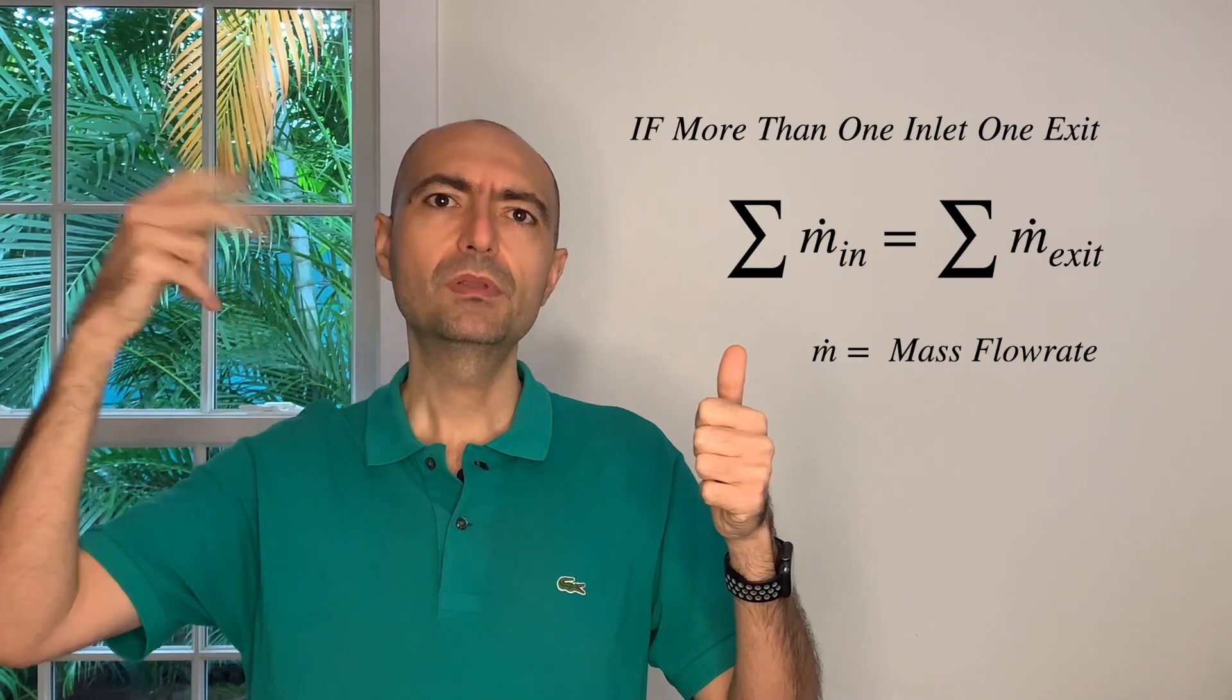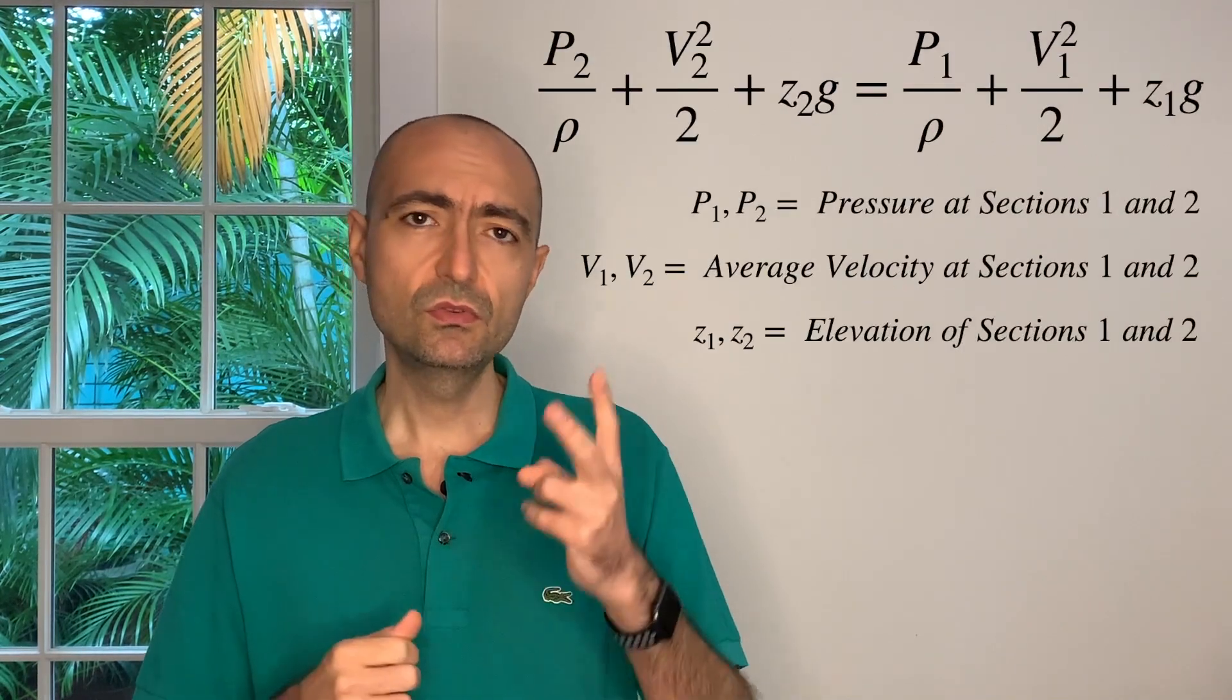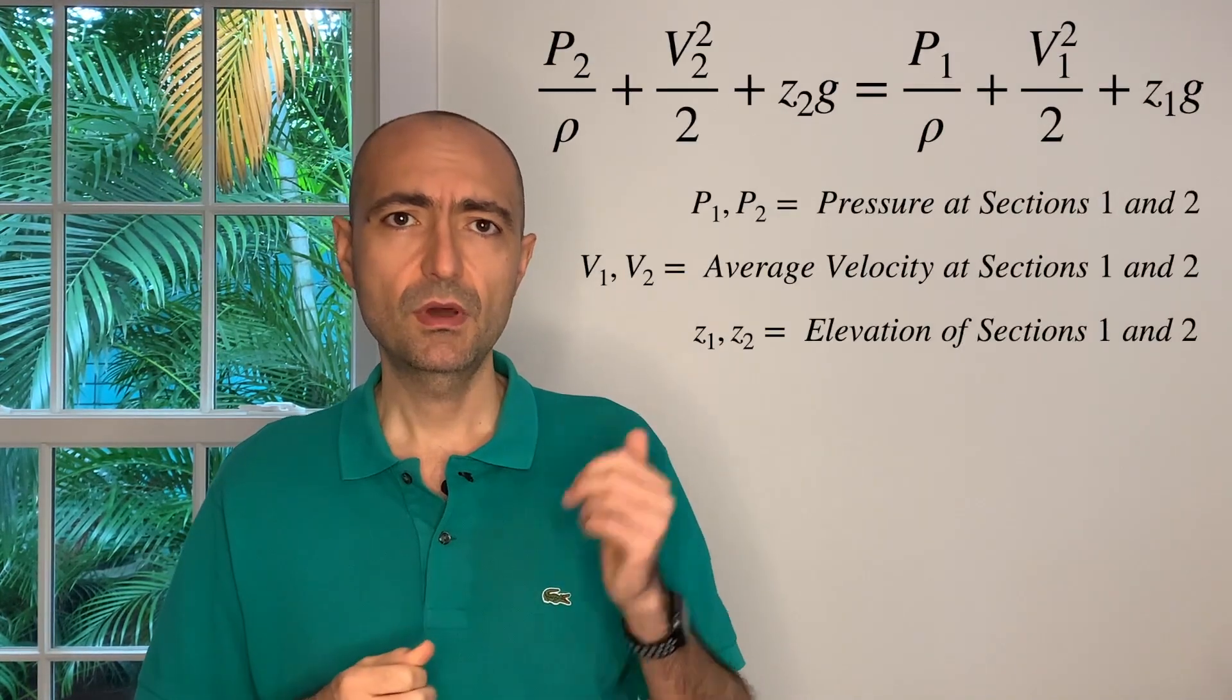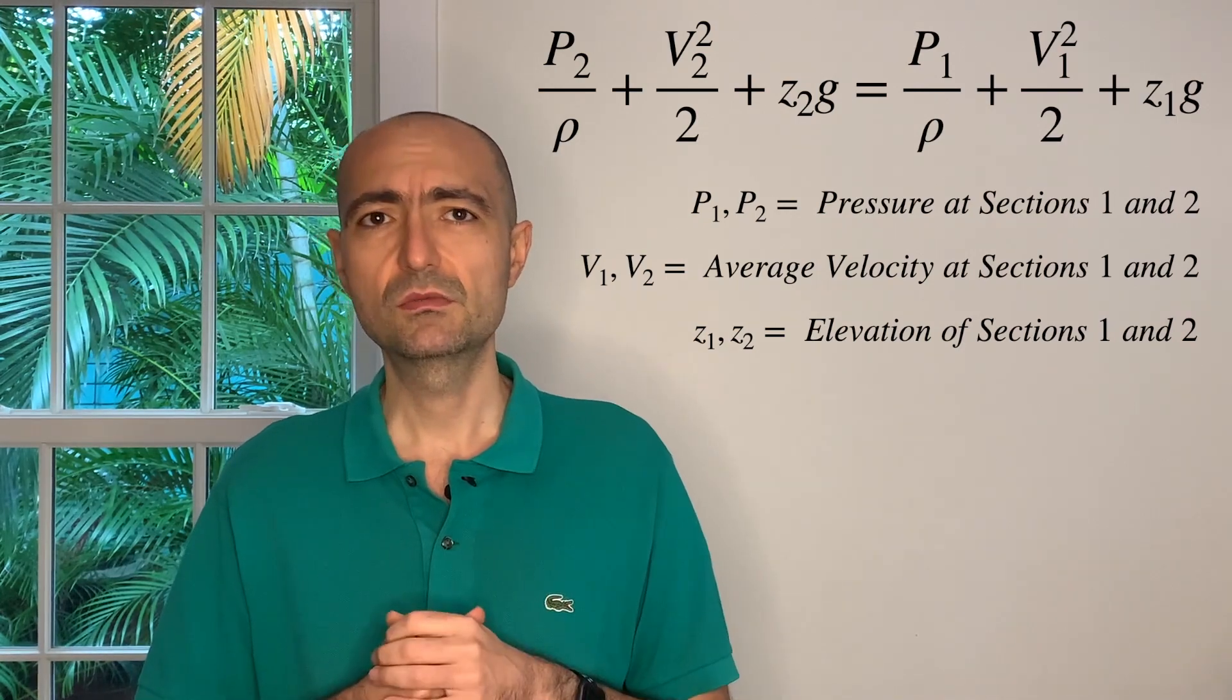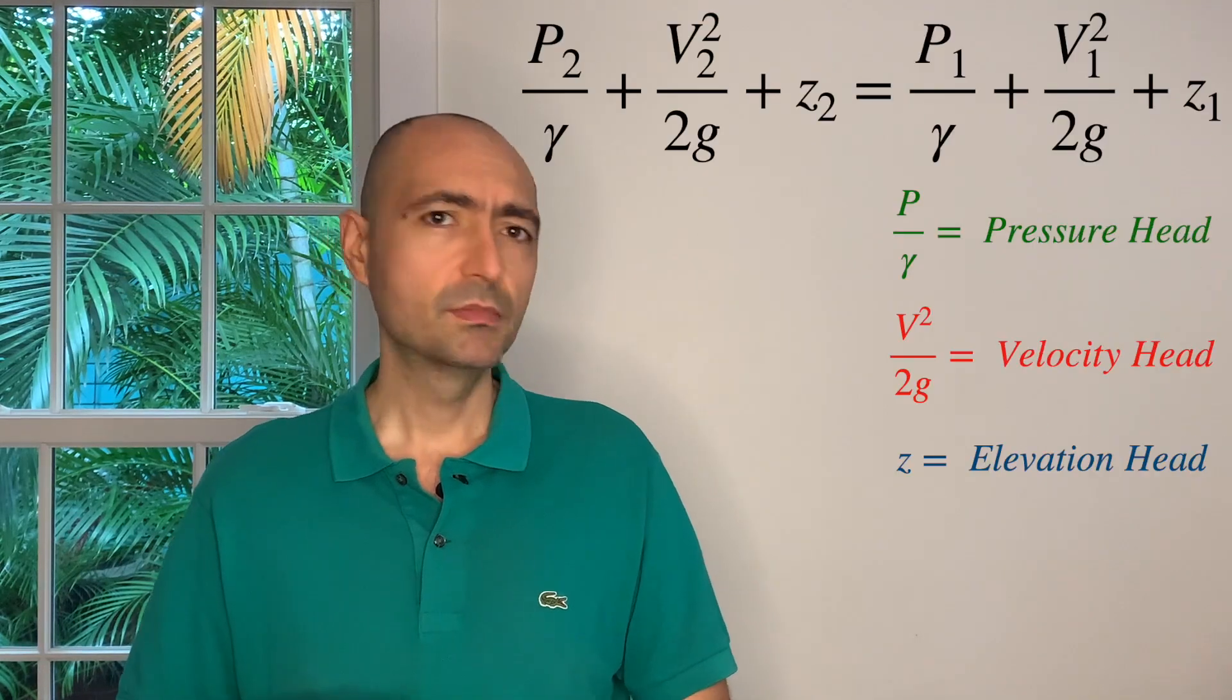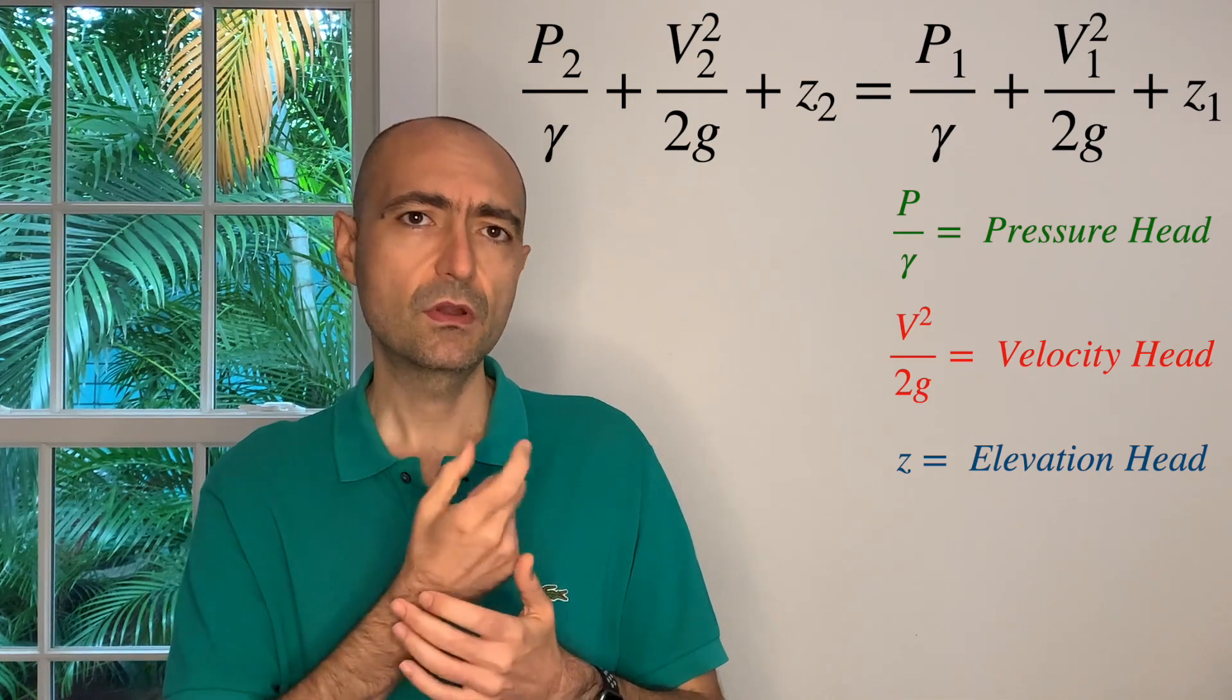Next is the conservation of energy. Basically what they boil down to is Bernoulli's equation. There are two versions of it. This is the official Bernoulli's equation, but I can divide both sides by g, and you will obtain this equation.